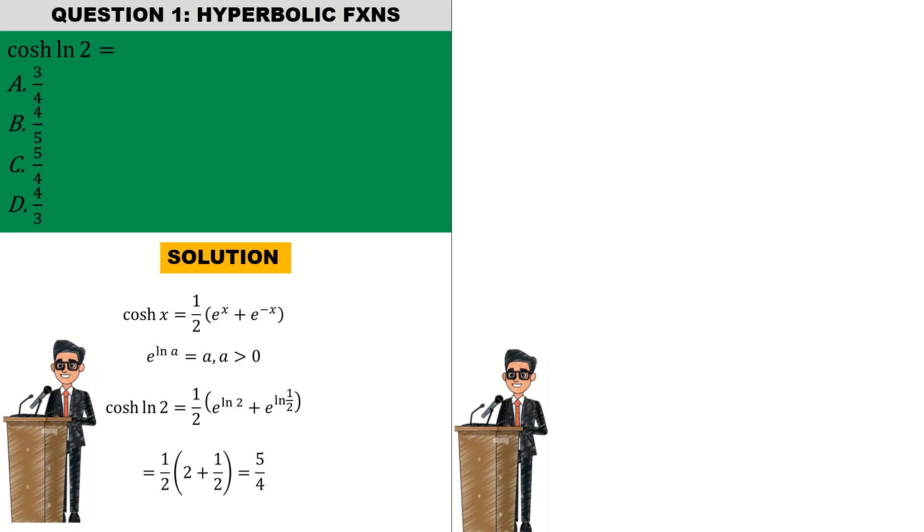Using the identity that e raised to the power ln of a is equal to a, we simply have e raised to the power ln of 2 equal to 2 and e raised to the power ln of half equal to half. From there we get our response as half into 2 plus half, which is half into 5 divided by 2, and we get the response as 5 divided by 4. The correct answer is option C.